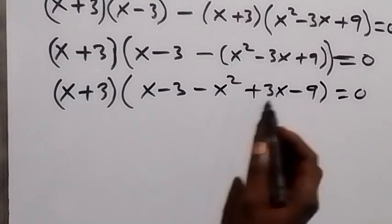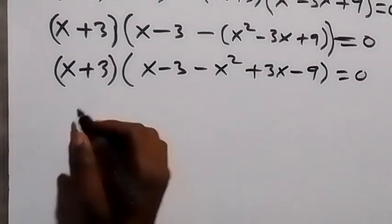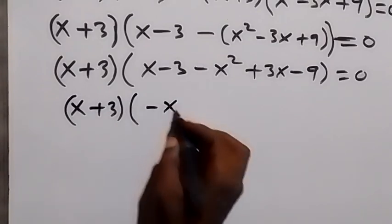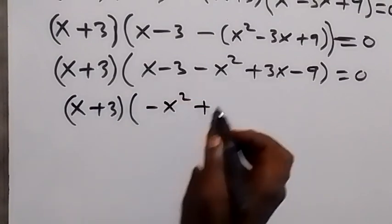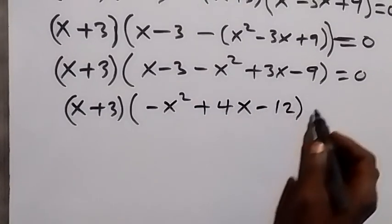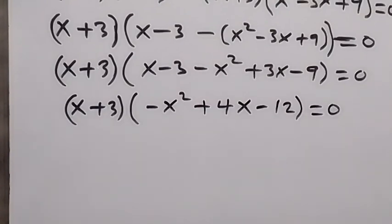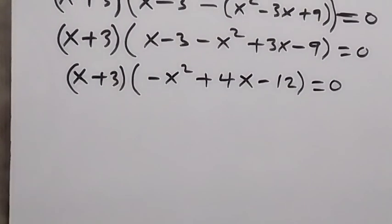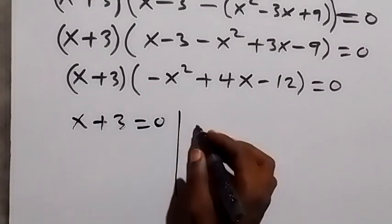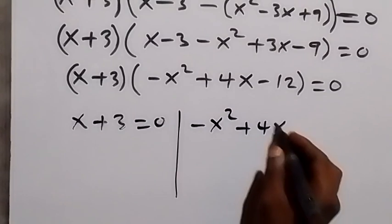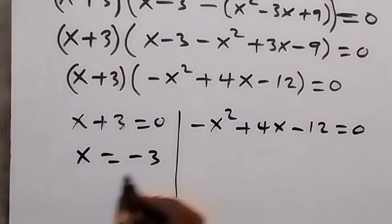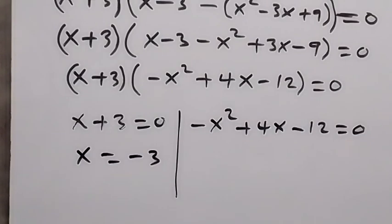From here let's collect the like terms and rearrange. We have (x + 3) multiplied by: we have minus x squared, then x plus 3x that's 4x, then minus 3 minus 9 that gives us minus 12, which equals 0. Now from here we have two possible cases. The first is x + 3 = 0, giving x equals minus 3.